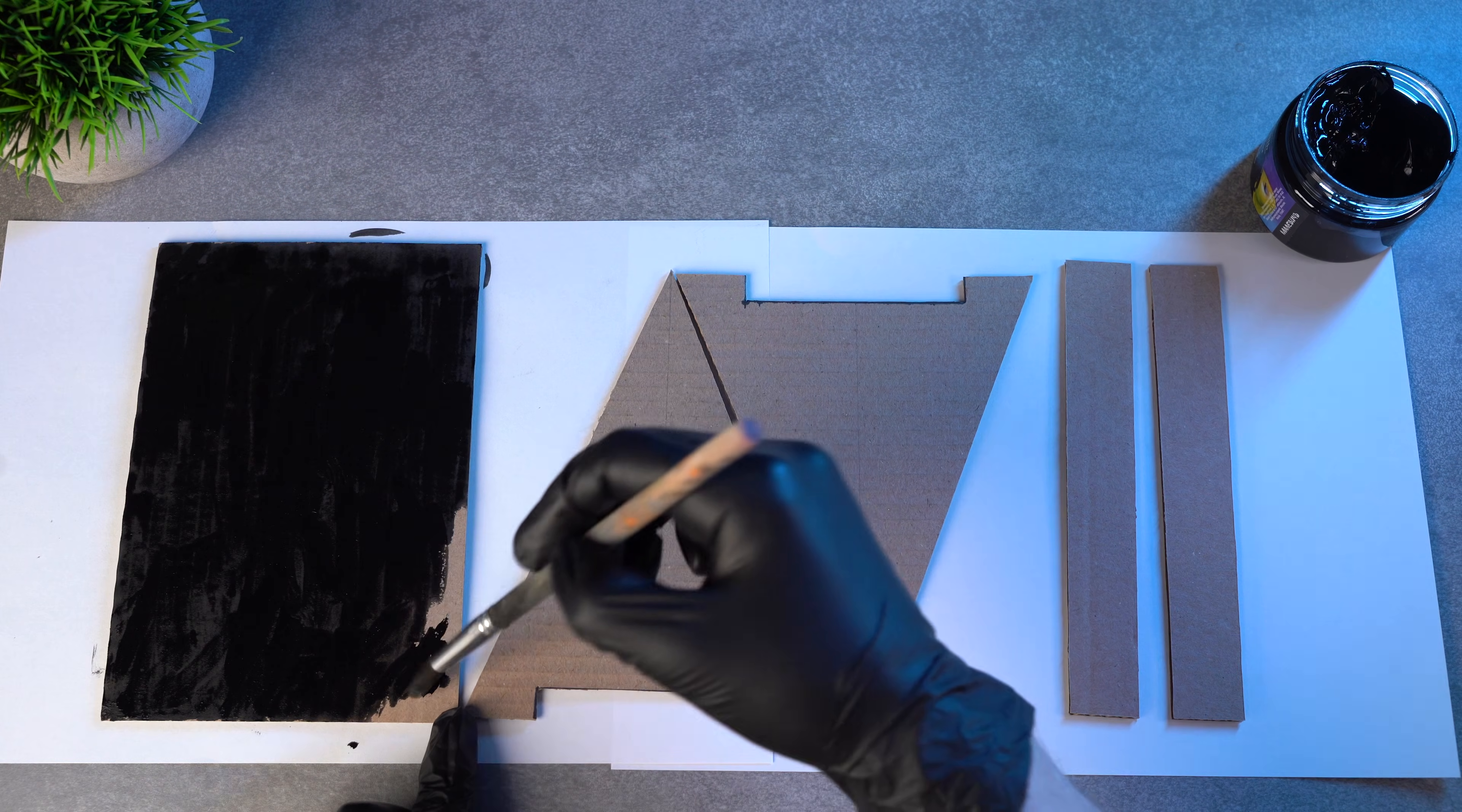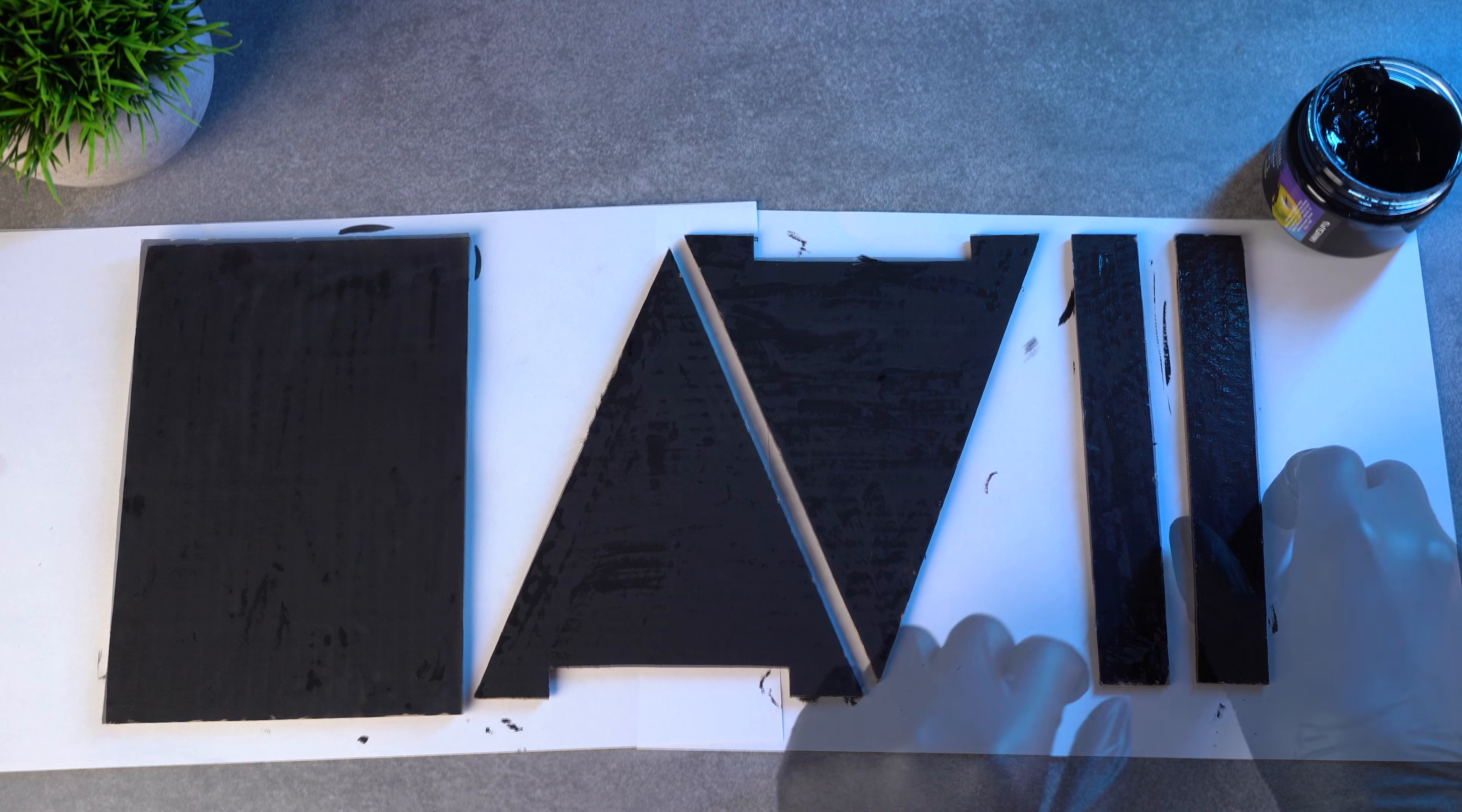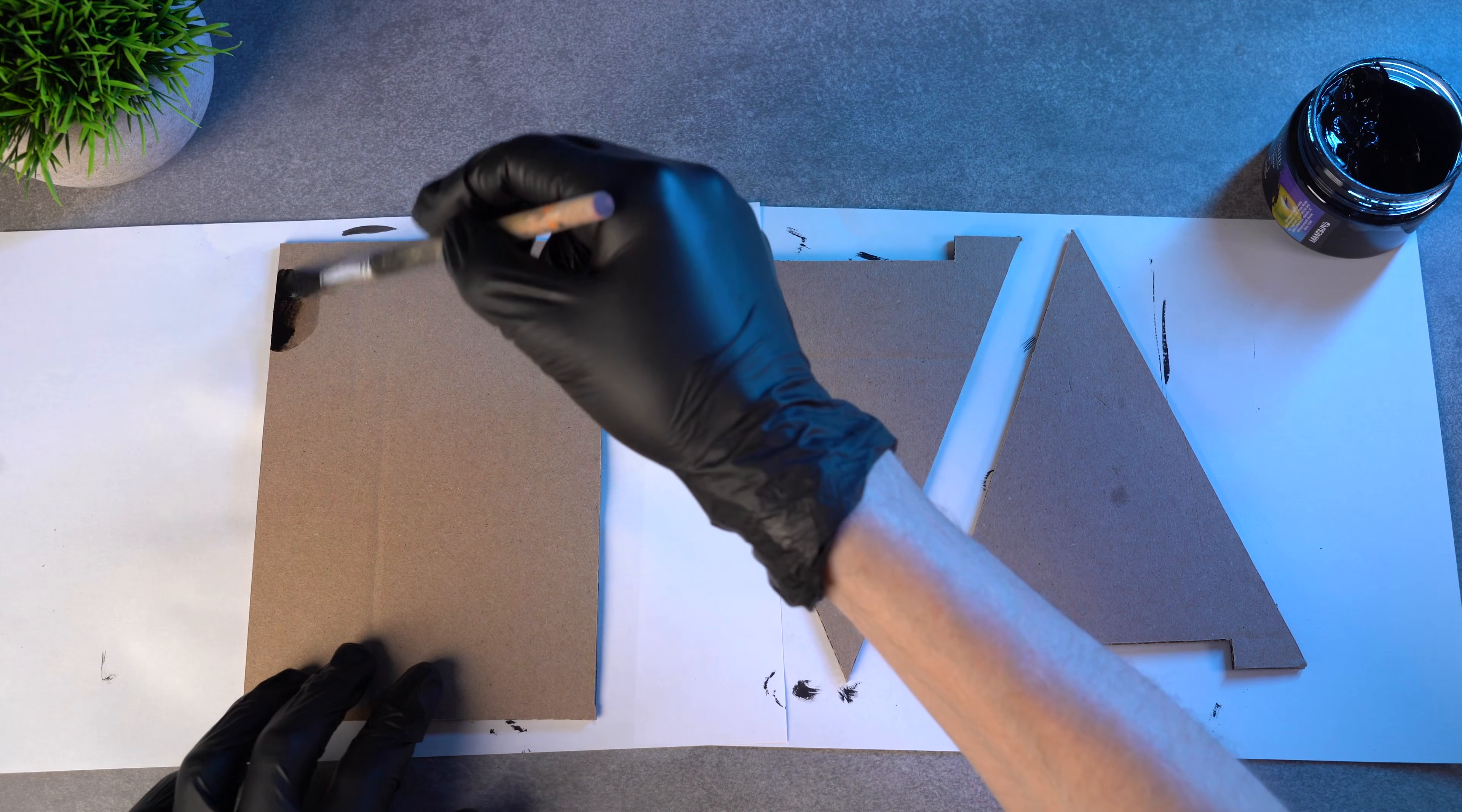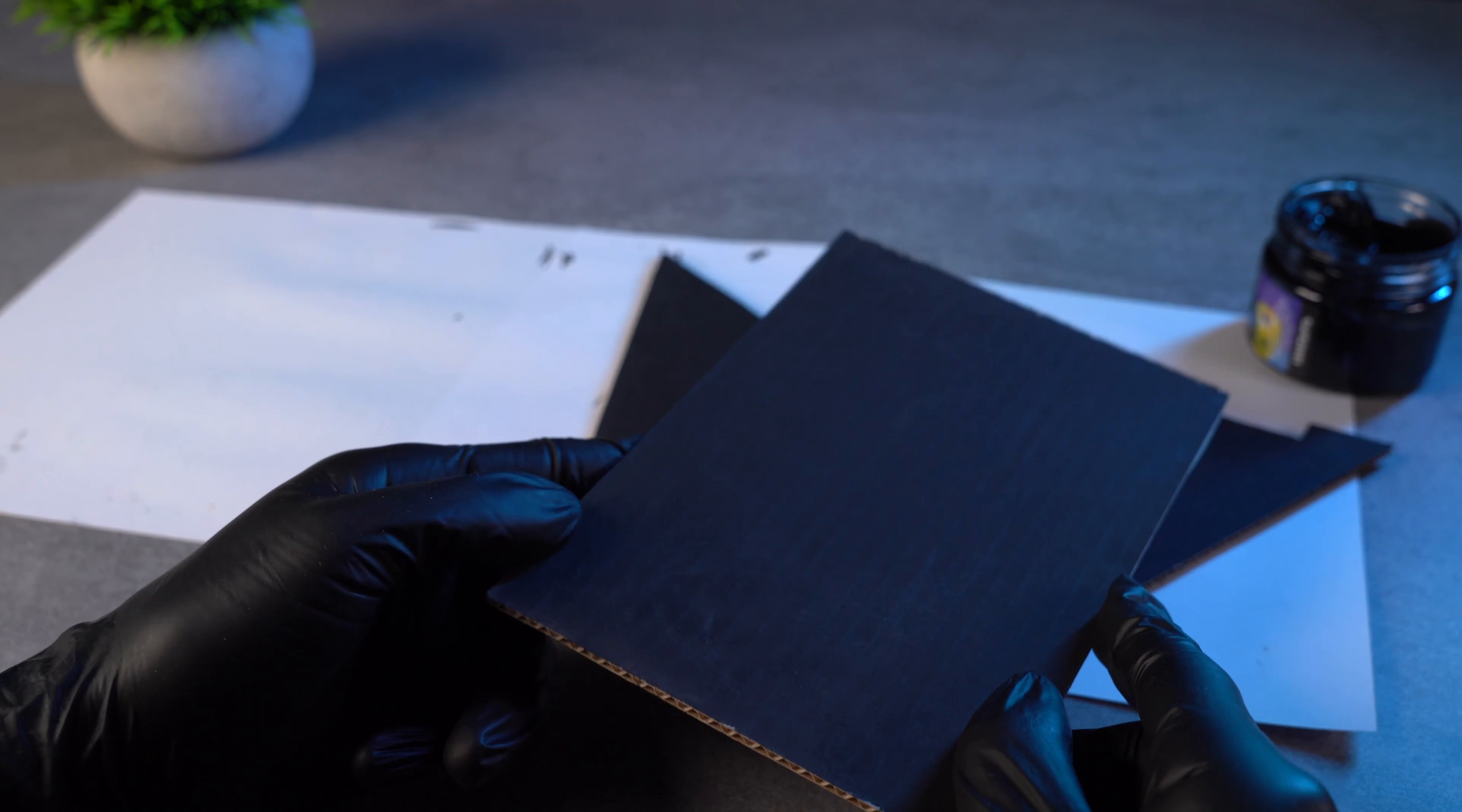All of these parts need to be painted black as well. Cover every surface evenly without missing any spots. Once the strips are dry, set them aside. Flip the other pieces over, and paint the other side too. Great, everything is dry, so we can move on.